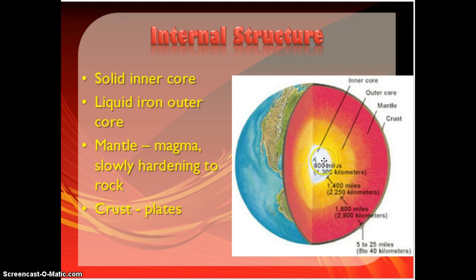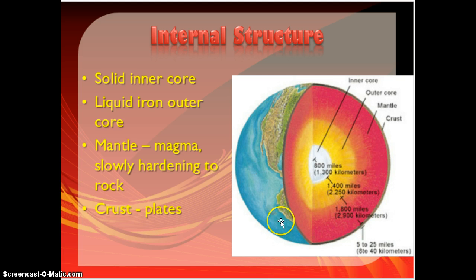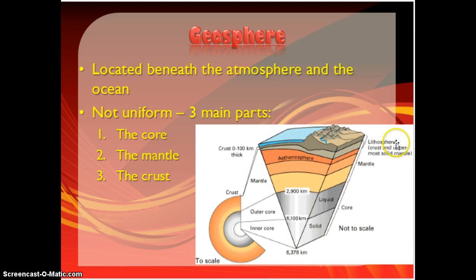We know that it has a solid inner core, and then there's a liquid outer core of iron around that. Above that, the mantle is kind of a molten magma — just very hot, liquefied rock — and it slowly hardens as you get closer to the crust where it gets cooler. The lithosphere is that very outermost crust and also the very upper layer of the mantle — anything solid rock. And then the asthenosphere is that upper level of molten rock in the mantle.